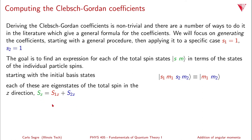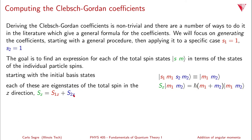The total Sz equals S1z plus S2z. Applying this operator to the state |M1, M2⟩: S1z acts only on M1 giving ℏM1, and S2z acts only on M2 giving ℏM2. Their sum gives Sz|M1,M2⟩ = ℏ(M1+M2)|M1,M2⟩, confirming that |M1,M2⟩ is indeed an eigenstate of Sz with eigenvalue ℏ(M1+M2).